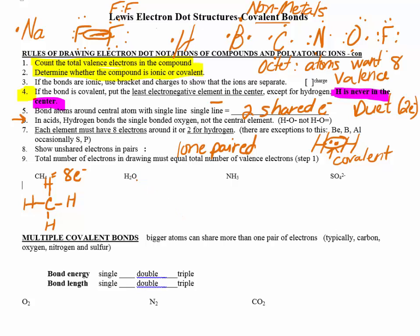Now water: oxygen has six valence electrons, each hydrogen has one, so the total is eight valence electrons available. Oxygen is electronegative but hydrogen can never go in the middle, so oxygen goes in the center with a hydrogen on each side. Each hydrogen is happy with two, but oxygen wants eight: two, four — then fill in the rest with lone pair dots — six, eight. Double-check: each hydrogen has two, oxygen has eight. Stable, using only eight electrons.